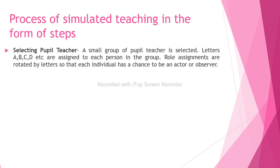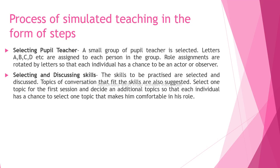Process of simulated teaching in steps: selecting pupil teachers — a small group of pupil teachers is selected. Each person in the group gets a role, and role assignments are rotated so that each individual has a chance to be an actor or observer. The skills to be practiced are selected and discussed. Topics of conversation that fit the skills are also suggested. Select one topic for the first session and decide an additional topic so each individual has a chance to select a topic that makes them comfortable in their role.